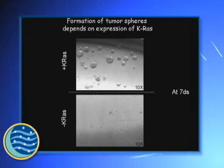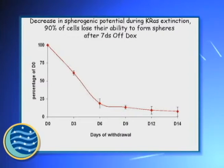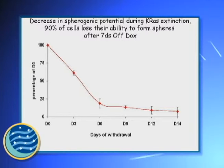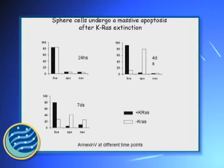In the absence of KRAS, spherogenic cells remain as single cells in culture. And if we re-express KRAS in these cells, they reform spheres, but there is a decrease in spherogenic potential during KRAS extinction. After one week, just 10% — a very small fraction of the cells at the beginning — are able to give rise to a sphere when KRAS is reactivated. A possible explanation is that sphere cells undergo massive apoptosis at day four after KRAS extinction.